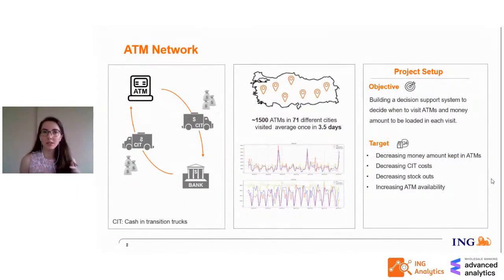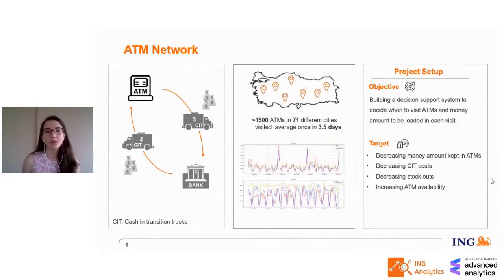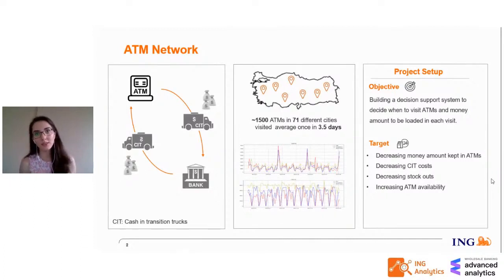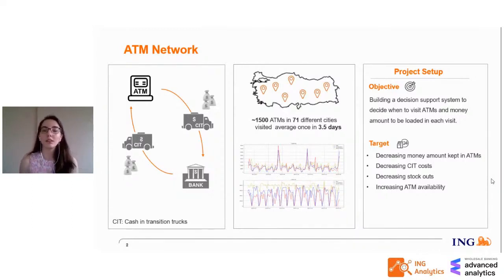ING plans ATM visits for tomorrow — which ATM will be visited and how much money will be loaded to those ATMs. These plans are given to a third-party company which handles all money distribution. The money-transferring trucks are called cash-in-transition trucks, or CITs. This company does not only work with ING but also with other banks, so road optimization is done completely by themselves.